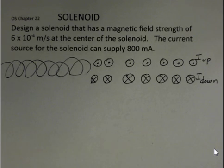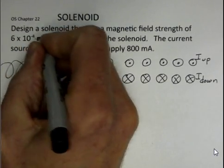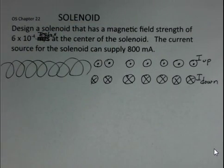We want to design a solenoid that has a magnetic field strength of 6 times 10 to the minus 4 Teslas at the center of the solenoid, and we have an electrical current source available that can give us 0.8 amps, 800 milliamps. We want 6 times 10 to the minus 4 Teslas at the middle of our solenoid.